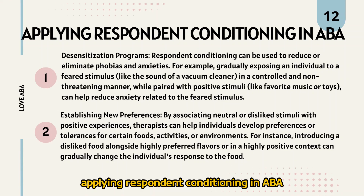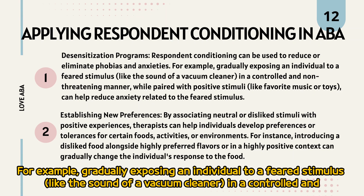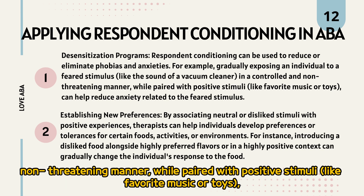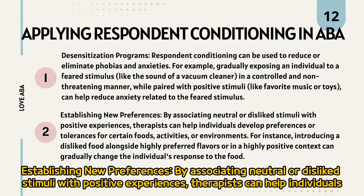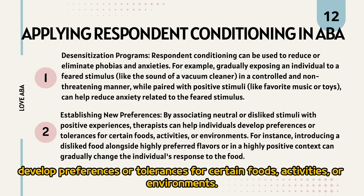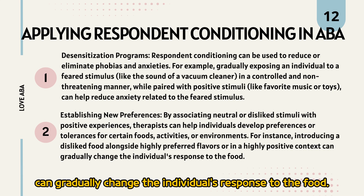Applying respondent conditioning in ABA — Desensitization programs: Respondent conditioning can be used to reduce or eliminate phobias and anxieties. For example, gradually exposing an individual to a feared stimulus, like the sound of a vacuum cleaner, in a controlled and non-threatening manner while paired with positive stimuli like favorite music or toys can help reduce anxiety. Establishing new preferences: By associating neutral or disliked stimuli with positive experiences, therapists can help individuals develop preferences or tolerances for certain foods, activities, or environments. For instance, introducing a disliked food alongside highly preferred flavors in a positive context can gradually change the individual's response to the food.